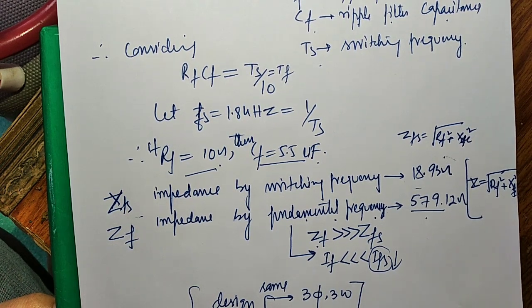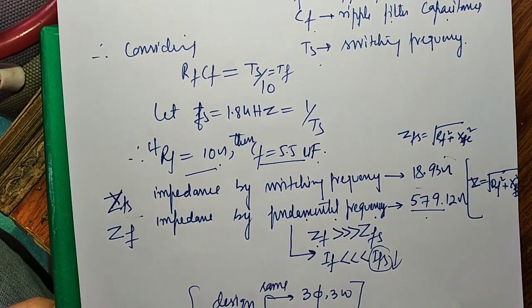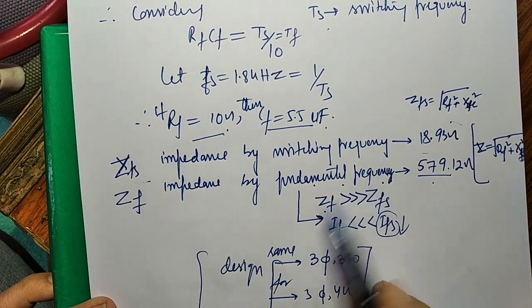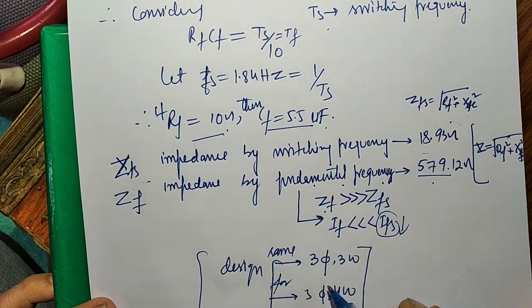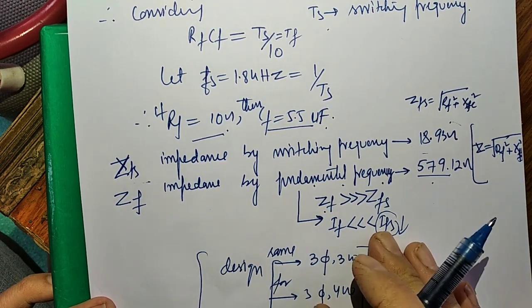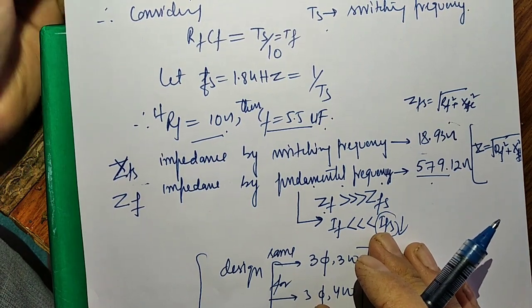The losses in this RC filter are very small — only 0.1% to 0.2% of the rated power. This RC filter design is the same for three-phase 3-wire, three-phase 4-wire, and single-phase systems.